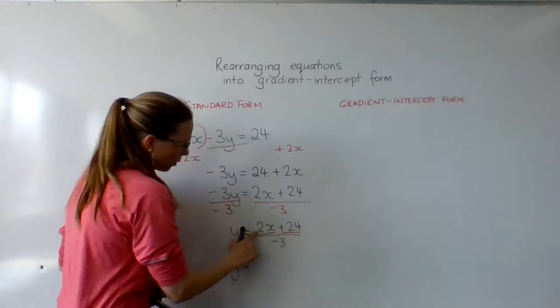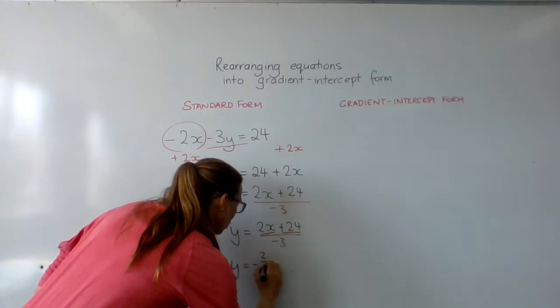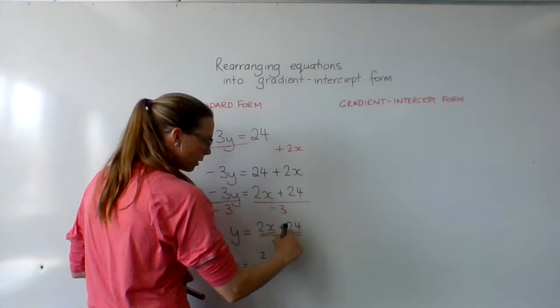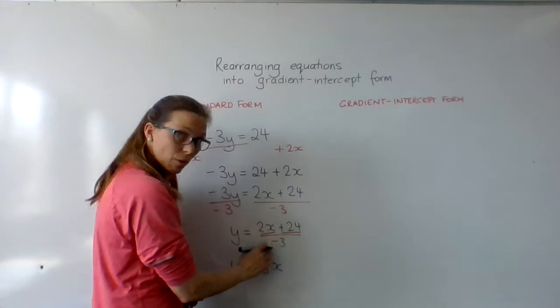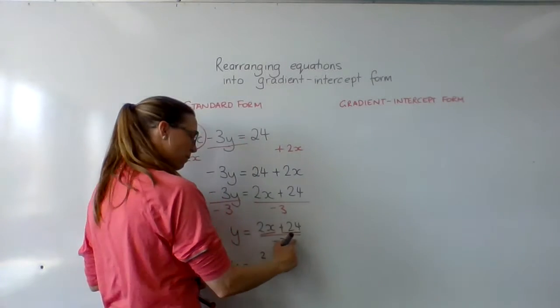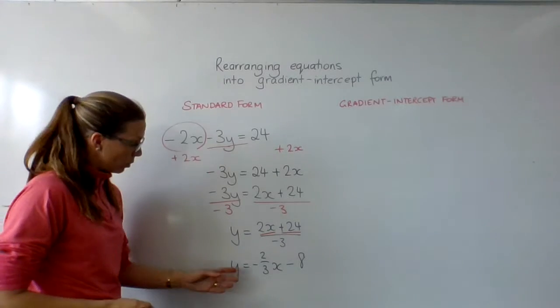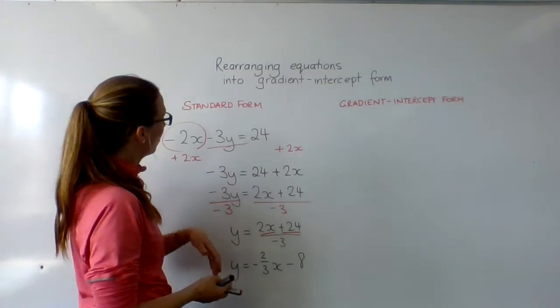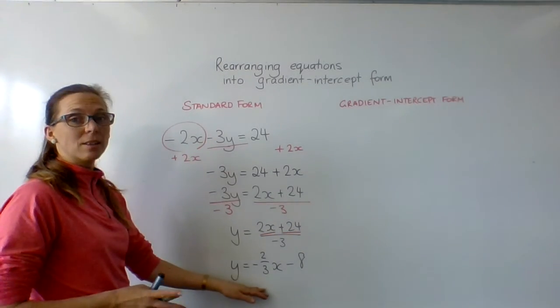So y equals 2 divided by negative 3, which leaves me with -2/3x. And then positive 24 divided by negative 3 is negative 8. And that leaves me with y = -2/3x - 8. And that's how I move from standard form into gradient-intercept form.